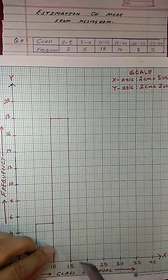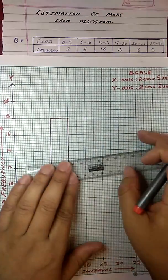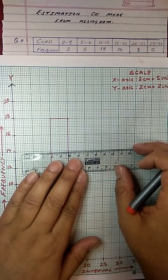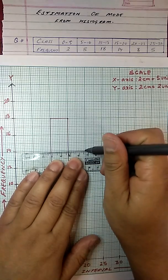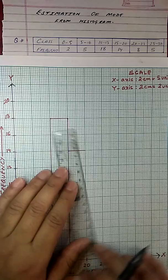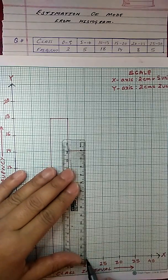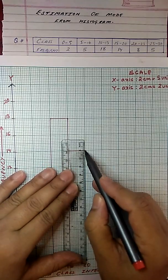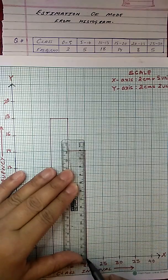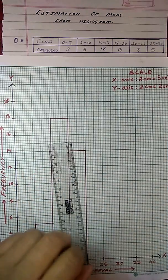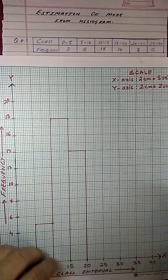Now what is the next? Next is 15 to 20 is 14. So 14 is here. So let me draw this block. 14 here. You need to be really careful while doing this because once you make an error, doing it again will consume a lot of time.